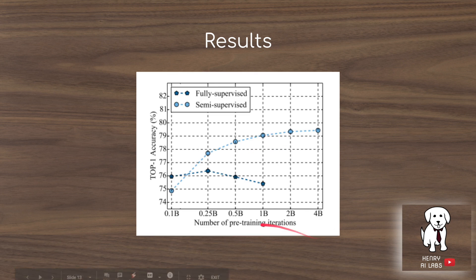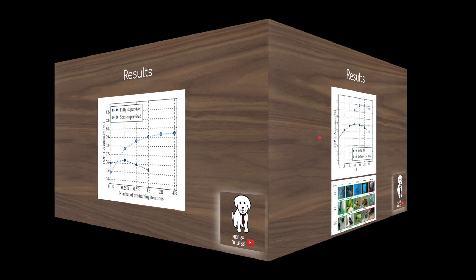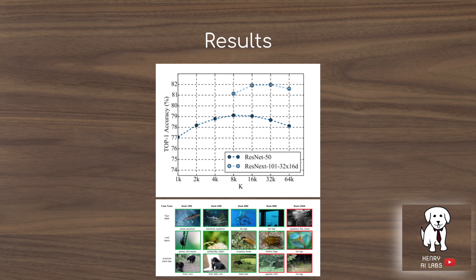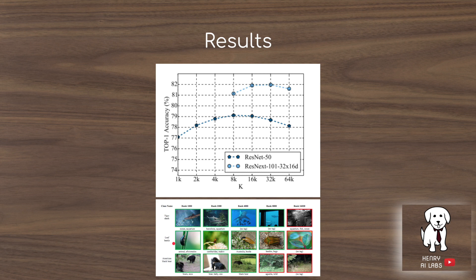One plot shows accuracy improving as a function of the number of pre-training iterations — as stated in their recommendations, they use far more pre-training epochs than supervised learning, with four billion training iterations achieving the highest accuracy. They also show results of increasing the K parameter — the number of top-scoring examples selected per class during model distillation. As K increases from 8K to 16K, images at the tail end of the ranking look less and less like their assigned class, for example leaf beetles.